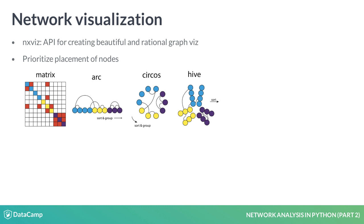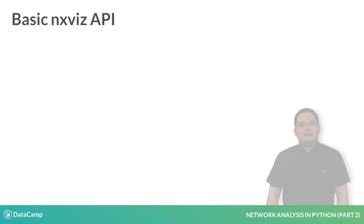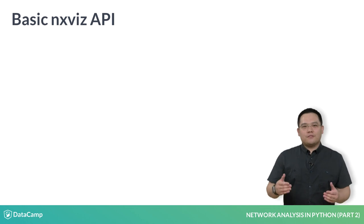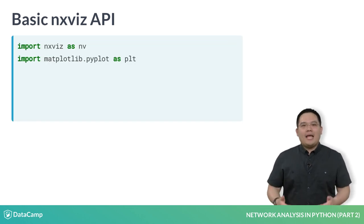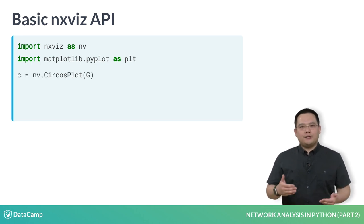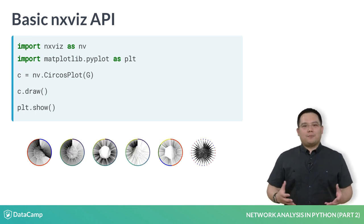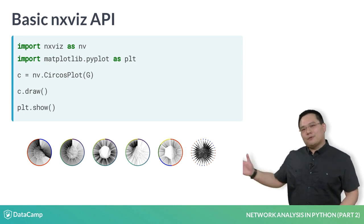We will be using the circos plot the most in this course, as I personally think that it has the best combination of aesthetics and functionality. To use the circos plot, you must first import nxviz and matplotlib's pyplot as plt. Then you can instantiate a new plot object, passing in the graph G. After that, you'll have to call the .draw() method of the plot object. Finally call the plt.show() function to get the plot to be drawn to screen, yielding beautiful network diagrams like the ones below.